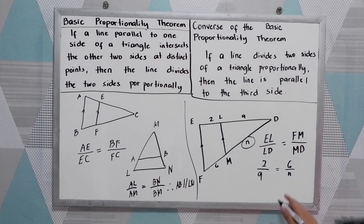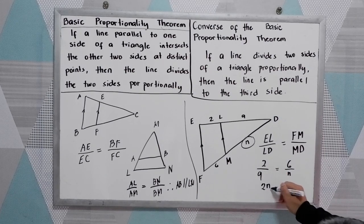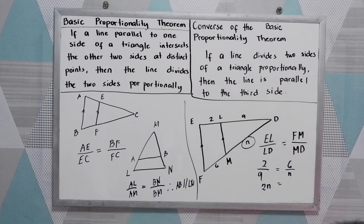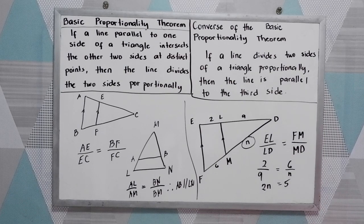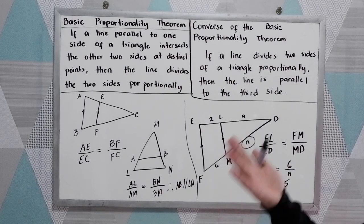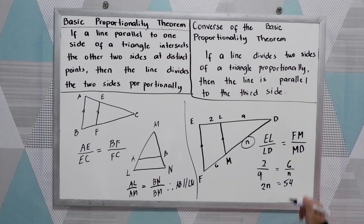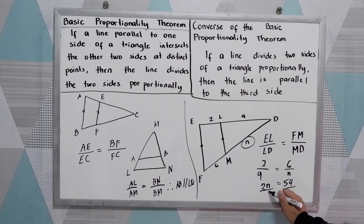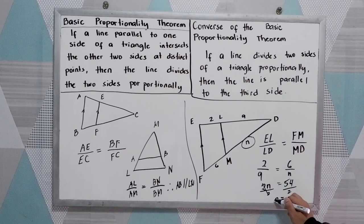Solve for N. So cross-multiply: 2 times N equals 9 times 6. That gives us 2N equals 54. To get the value of N, we divide by 2, so N is equal to 27.